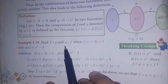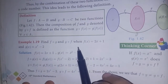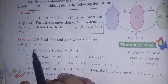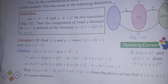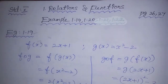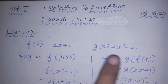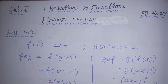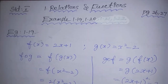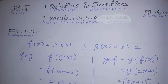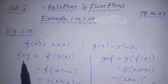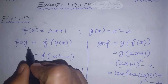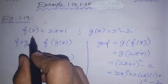Find f∘g and g∘f when f(x) is equal to 2x plus 1 and g(x) is equal to x squared minus 2. Let's find out how to get f∘g, that is f of g of x.